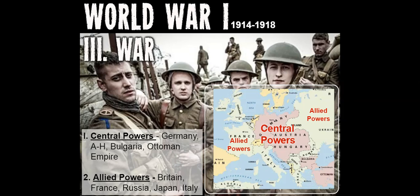Originally, Italy had been an ally of Austria-Hungary and Germany, but shortly into the war Italy dropped out and backed out on their alliance. They remained neutral or slightly aligned with the Allied Powers because they were hoping to gain territory.